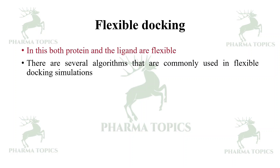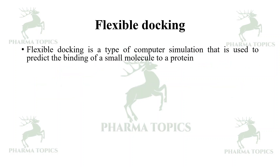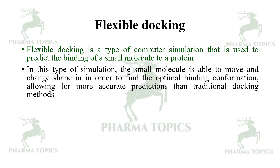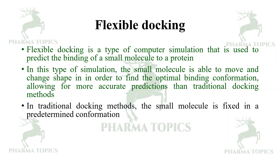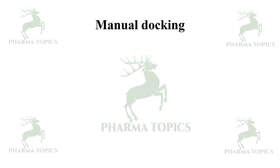Next is flexible docking, in which both the protein and the ligand are flexible. Several algorithms are commonly used in flexible docking simulations, including Monte Carlo algorithms, genetic algorithms, and simulated annealing algorithms. Flexible docking is a type of computer simulation used to predict the binding of a small molecule to a protein. The small molecule is allowed to move in order to find the optimal binding conformation, giving more accurate predictions than traditional methods. By allowing the small molecule to move and change its shape, flexible docking can provide more accurate predictions of binding affinity and help identify potential drug candidates.